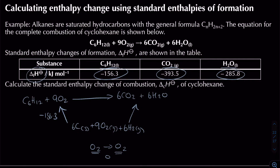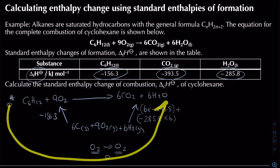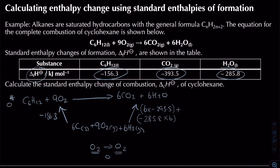For the products side: 6 times minus 393.5 (for CO₂) added to minus 285.8 times 6 (for H₂O). Setting up the equation: the enthalpy change of combustion equals zero, then subtracting minus 156.3 (going against the arrow), then adding the products value going along the arrow.